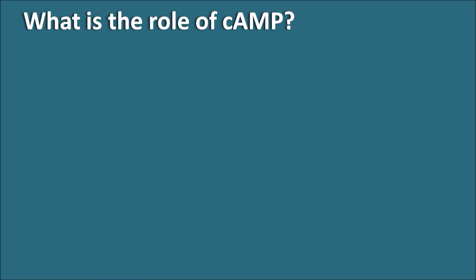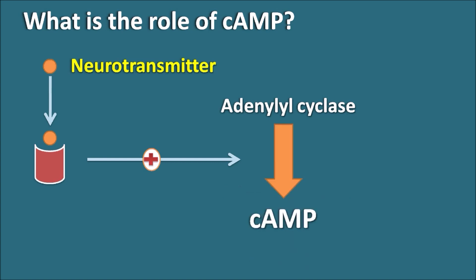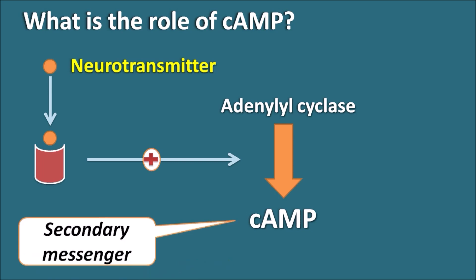Cyclic AMP is released by the action of neurotransmitters. Neurotransmitters act on receptors, and when a neurotransmitter binds to the receptor site it can activate the conversion of adenylyl cyclase, which then produces cyclic AMP. This cyclic AMP acts as a secondary messenger, while adenylyl cyclase acts as the primary signaling mechanism. Cyclic AMP is responsible for cellular functions within the target organ, so a chemical signal leads to cellular actions through cyclic AMP.